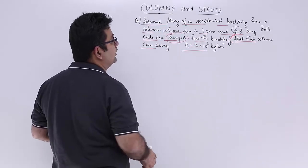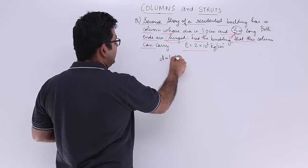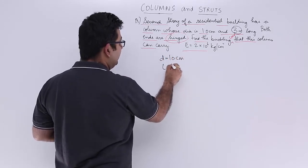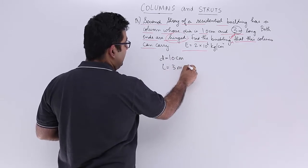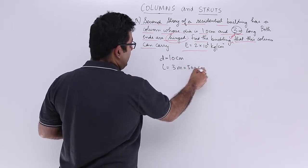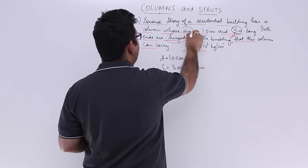Okay, let's write down the given data. The diameter given to you is 10 cm. The length given to you is 3 m which is 300 cm. It is a circular cross section.